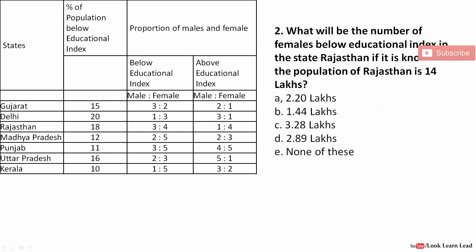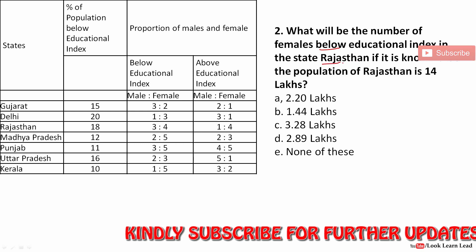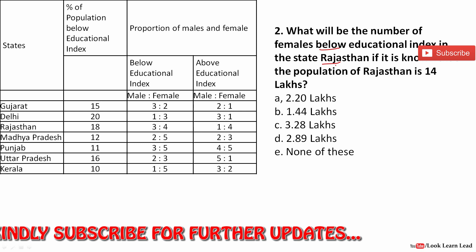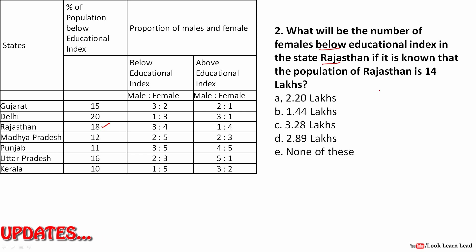The next question asks for the number of females below the educational index in Rajasthan. In Rajasthan, 18 percent are below the educational index. The total population of Rajasthan is given as 14 lakhs, so 18 percent of 14 lakhs are below the educational index.